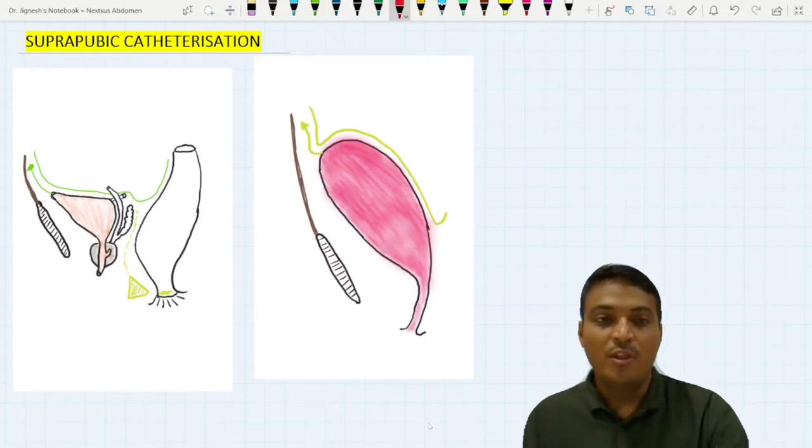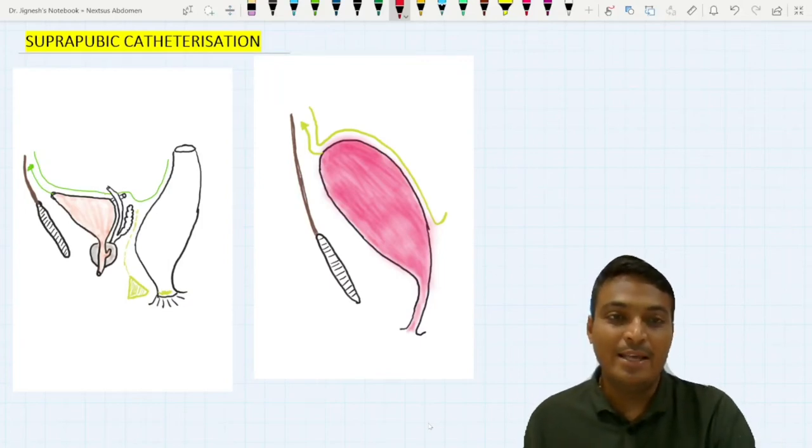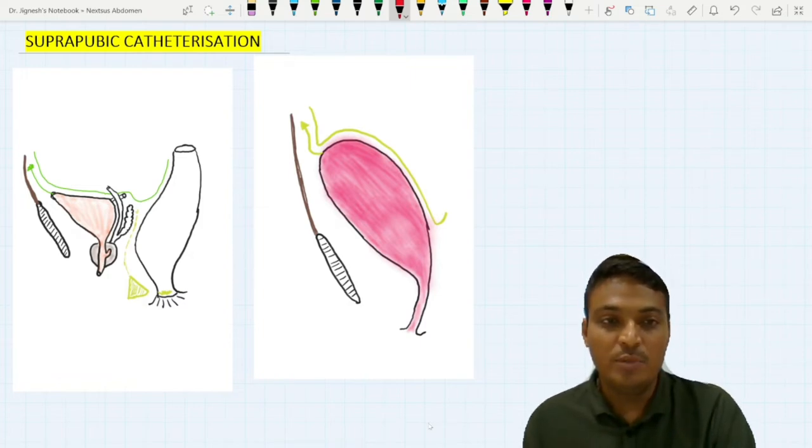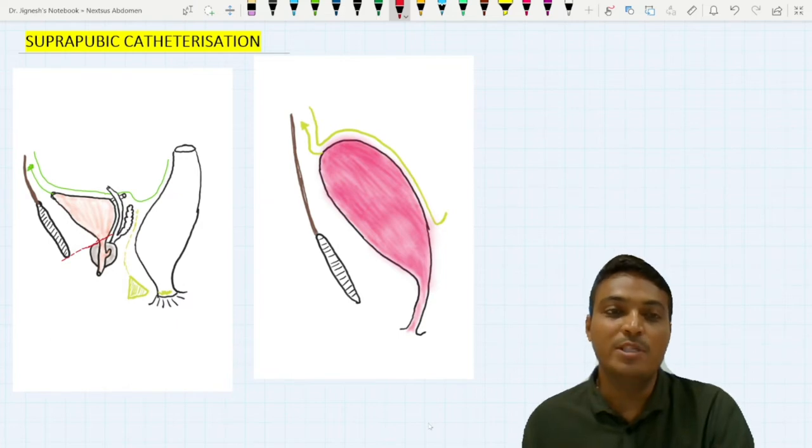Here we can see on the left side the urinary bladder is empty in case of adult. At the time of the empty bladder, the neck of the urinary bladder lies approximately at the lower border of the pubic symphysis and it is purely pelvic in position. It is covered by one peritoneal fold.